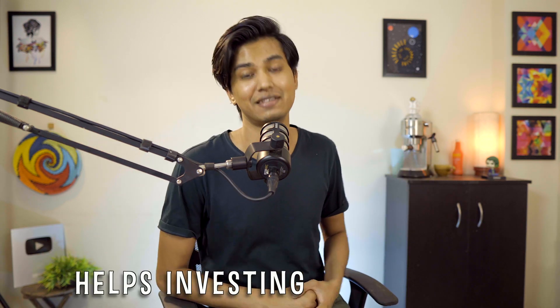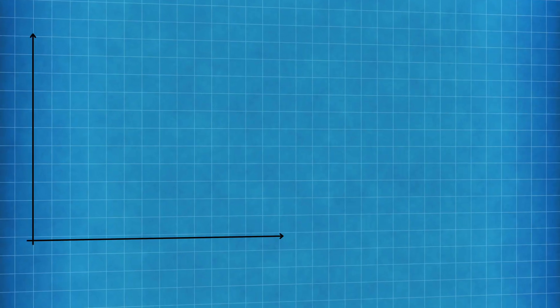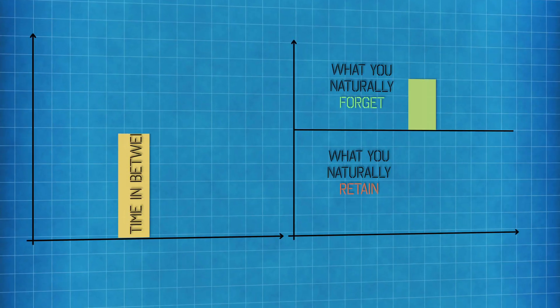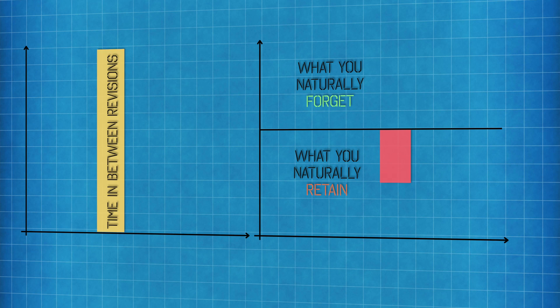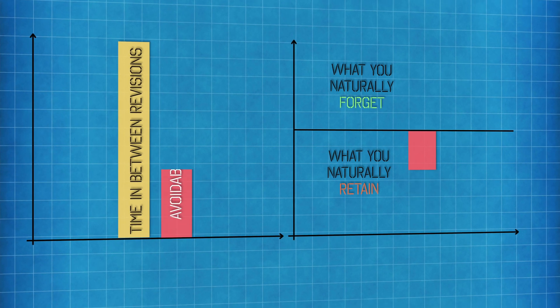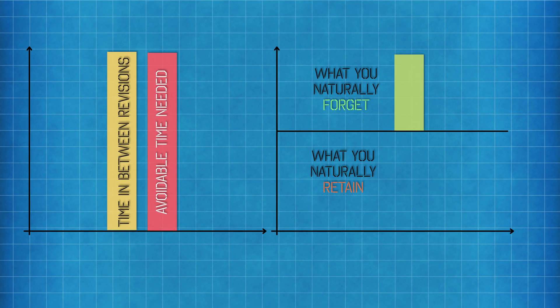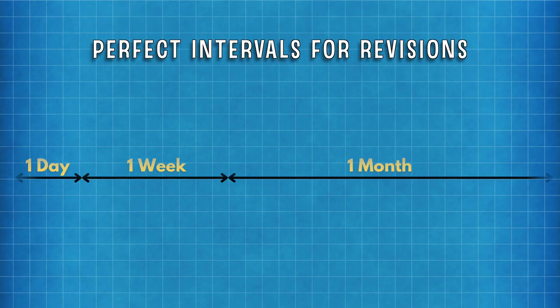By increasing intervals we are increasing the efficiency of the time invested towards revision, investing lesser time overall. On the contrary, if you increase the time too much between intervals, you forget almost everything — even things you understood properly — and then you require more and more time to get back even what you learned. Given too much time, you are going to forget almost everything.